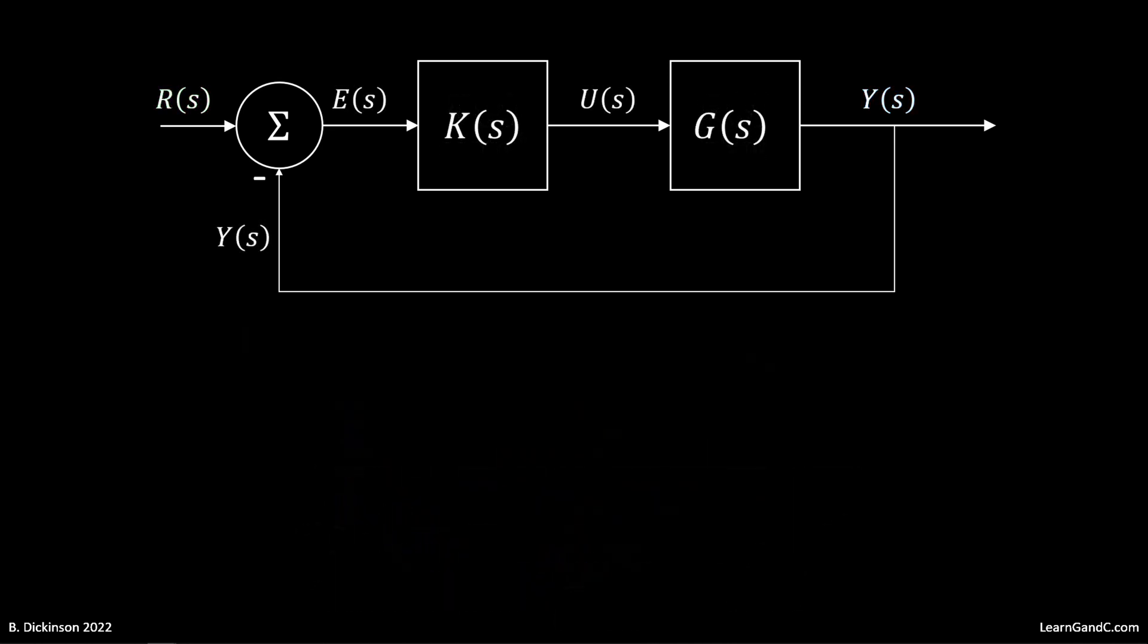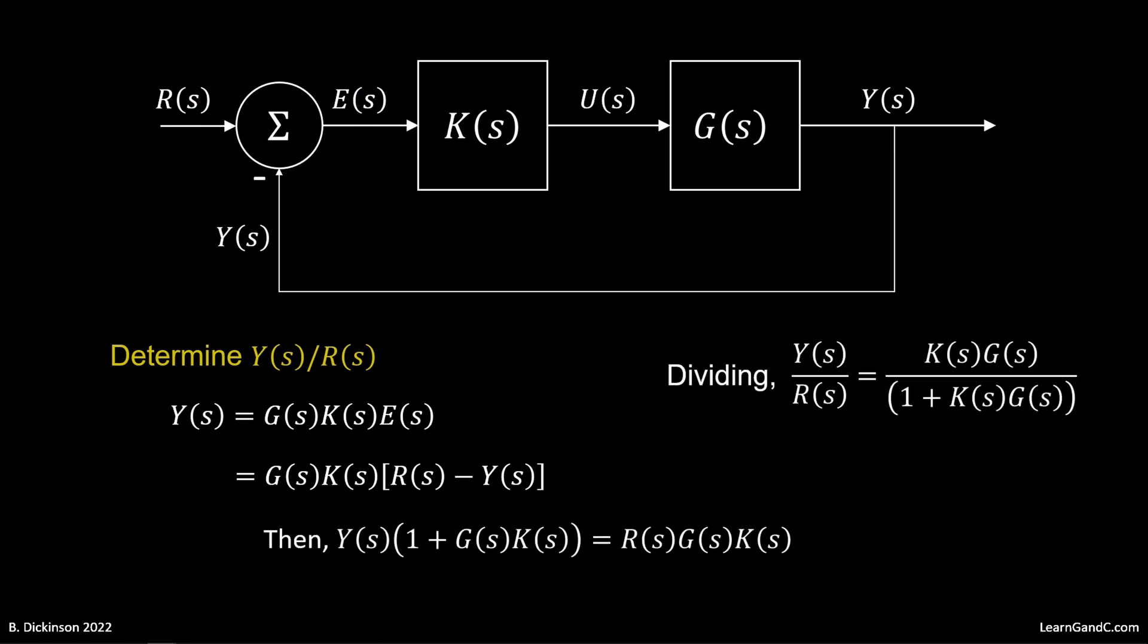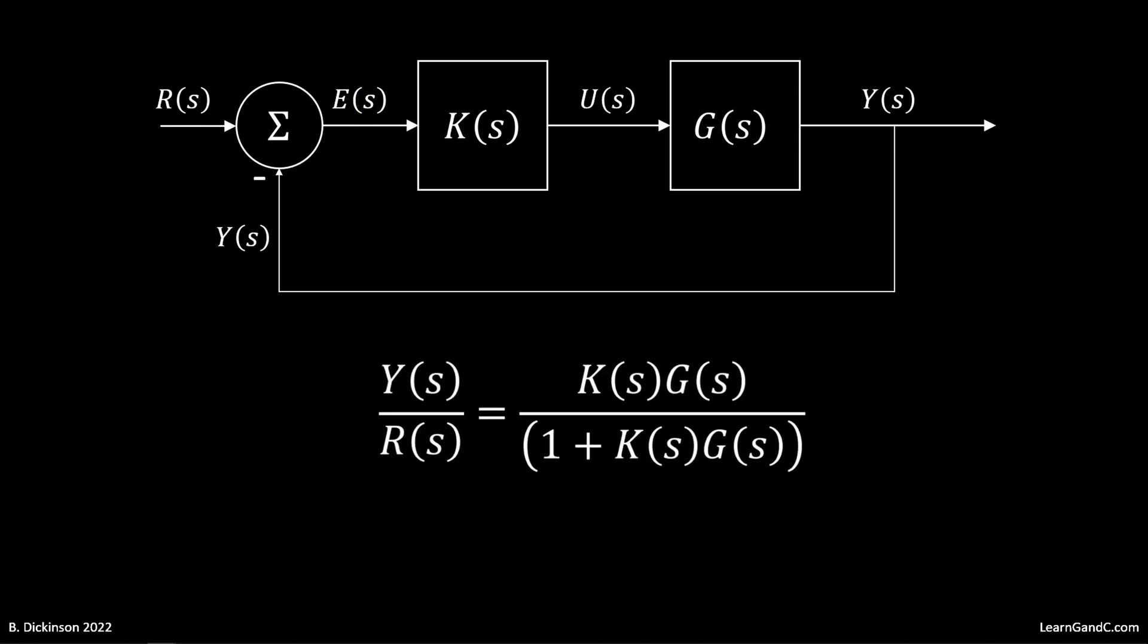But it's helpful to analyze the closed-loop transfer function in the frequency domain. We see that Y is G times K times E, and from the junction, E is R minus Y. So then we can solve for Y over R to obtain the closed-loop transfer function, determined as a function of the controller and plant transfer functions.